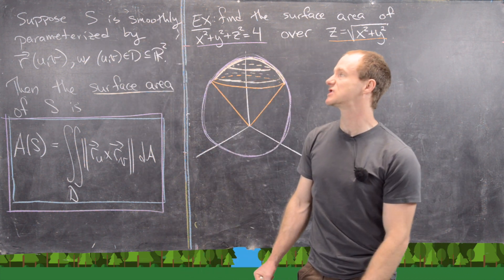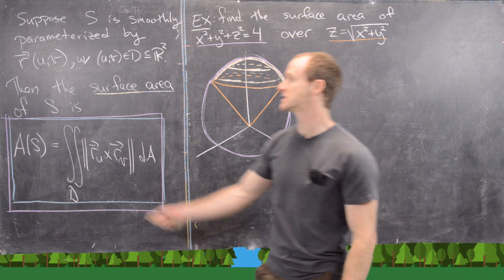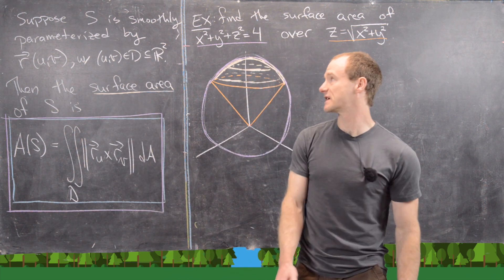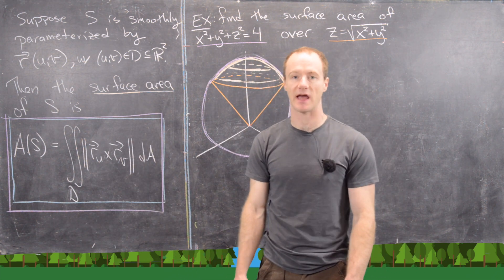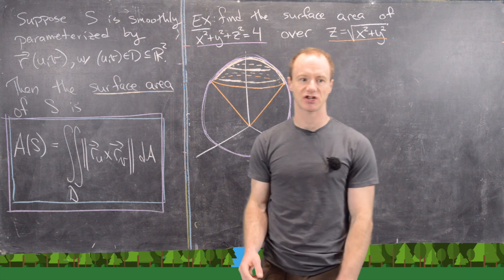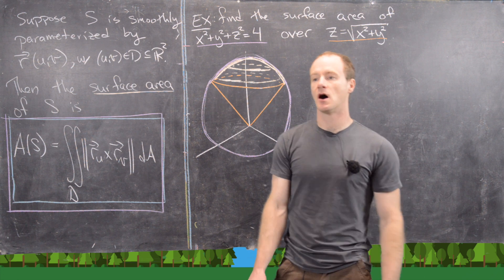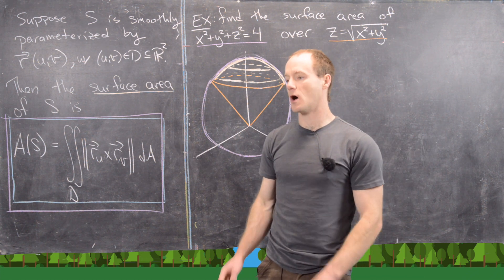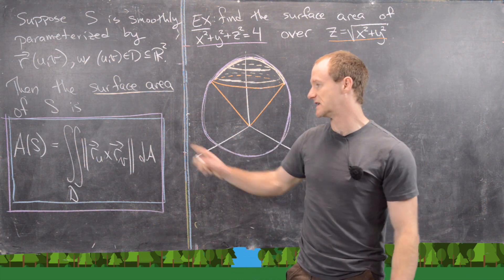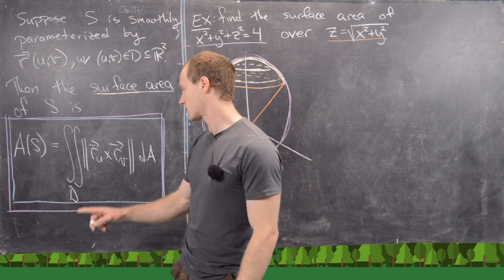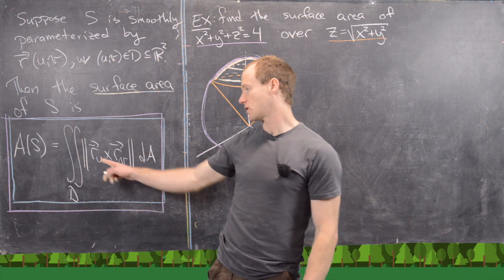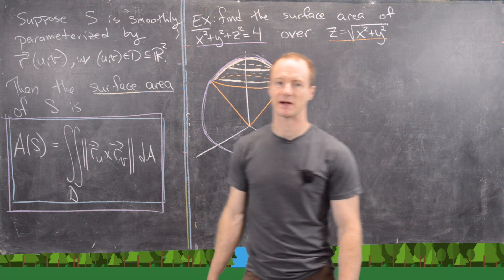Let's suppose that S is smoothly parametrized by the function R, which has parameters u and v, and u and v range over this subset D of the plane. R is one-to-one on D — it doesn't actually have to be exactly one-to-one, it has to be one-to-one on all but a set of measure zero or on the boundary. The surface area of S is given by the double integral over D of the magnitude of the cross product of the partial of R with respect to u and the partial of R with respect to v.